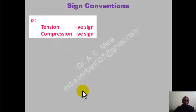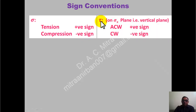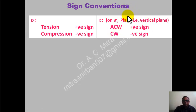Sign conventions for normal stress: if it is tensile (outward from the body), it is positive; if compressive (towards the body), it is negative. For shear stress tau xy, it is the shear on the plane of sigma x, which is the vertical plane. Anticlockwise on the vertical plane (sigma x plane) is positive; clockwise on that plane is negative.